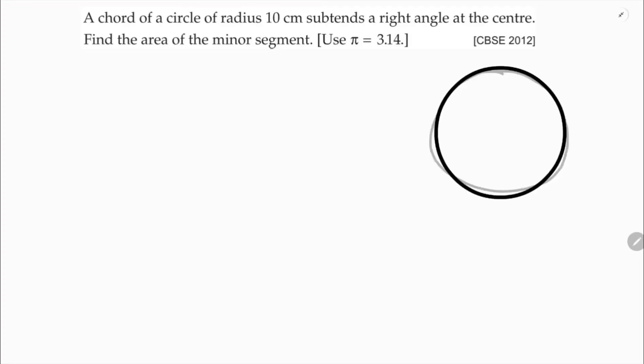Here I'll take this chord AB of radius 10 centimeters, so center of the circle O. This radius is 10 centimeters. It subtends an angle 90 degrees. You need to find area of minor segment, so here you need to find this area, the shaded part.